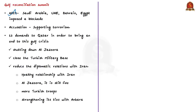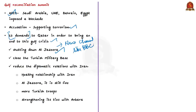They accused Qatar of supporting terrorism and issued around 13 demands to Qatar in order to bring an end to the Gulf crisis. However, Qatar did not respond to these demands. These countries even went to the extent of asking Qatar to shut down Al Jazeera, the international news channel owned by Qatar. They also asked Qatar to close down the Turkish military base in Qatar and to cut down its diplomatic relations with Iran. But Qatar responded in an entirely different manner — it did the opposite of whatever these countries asked.